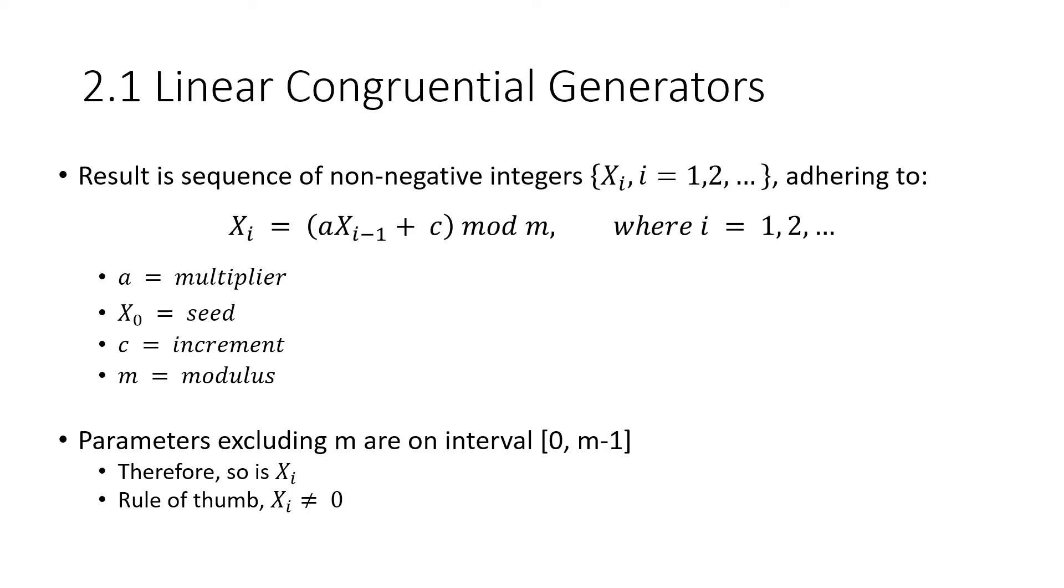In a linear congruential generator, the result is a sequence of non-negative integers which adhere to the formula on this slideshow. The A term is a multiplier, which you multiply the seed and then every resulting term from the previous trial. You add C, which is the increment, to generate this random number. The M then is the modulus or what you're dividing by to take the remainder of. So you usually want that to be pretty large.